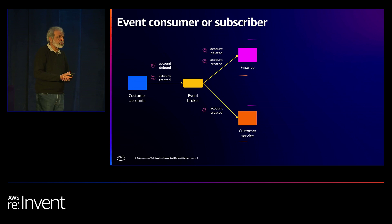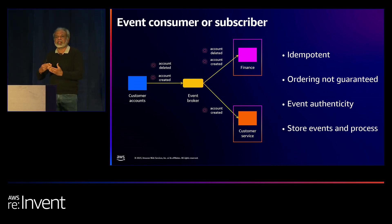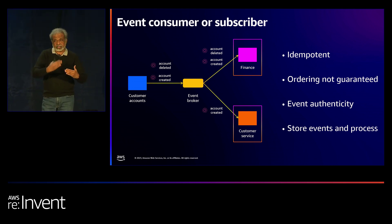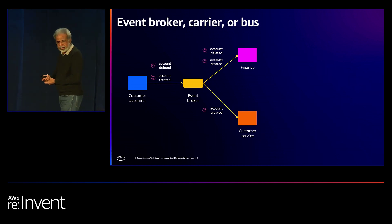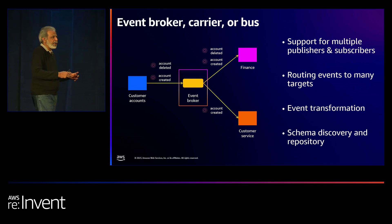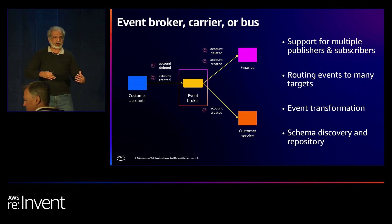From the consumer's point of view, they also have responsibilities. They cannot always expect events to arrive in order — they should be able to cope with events arriving in different orders. Most importantly, idempotency: there is no guarantee that an event will be delivered just once. You may receive multiple events of the same type. The event broker or bus is where EventBridge comes in — it ingests events from multiple producers and safely delivers them to several targets, providing filtering, transformation capabilities, and other features.